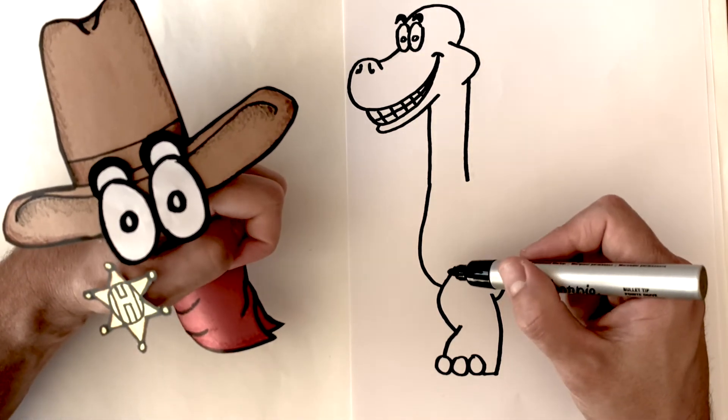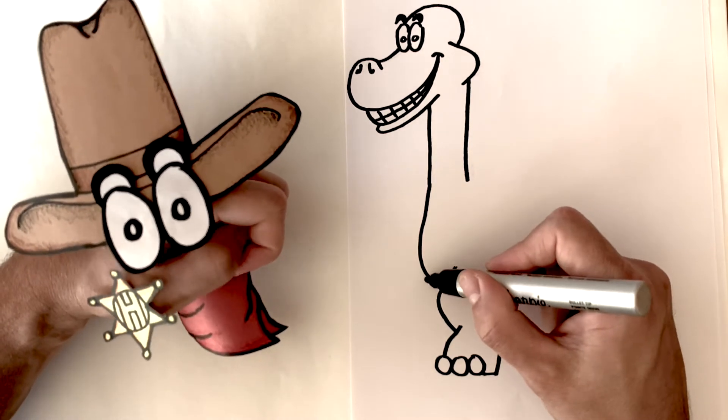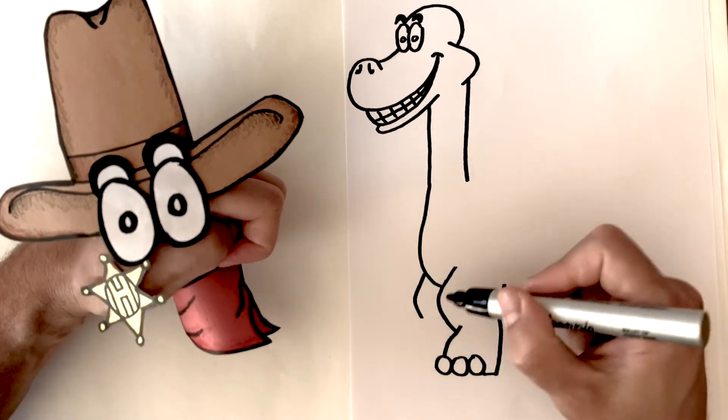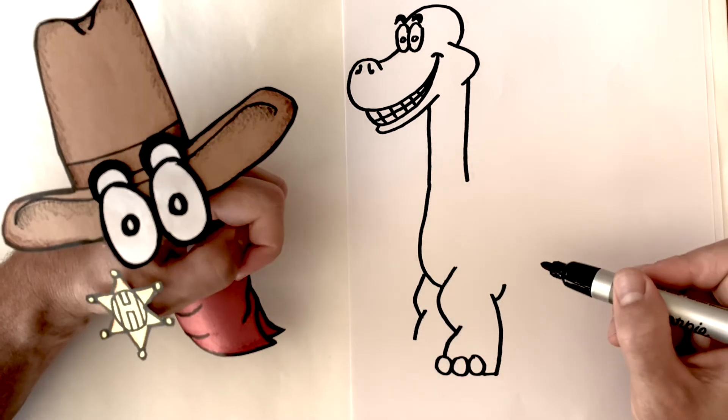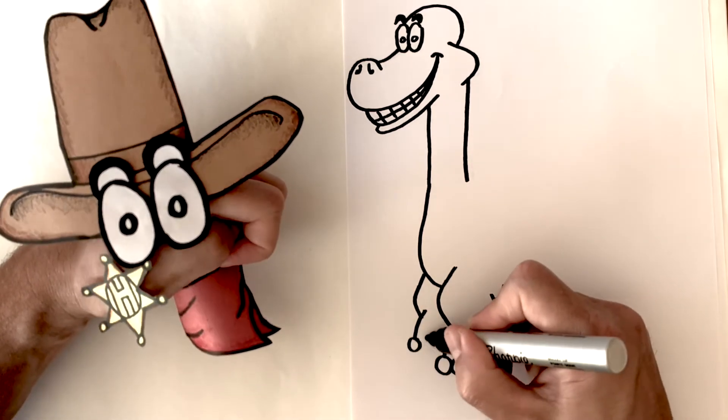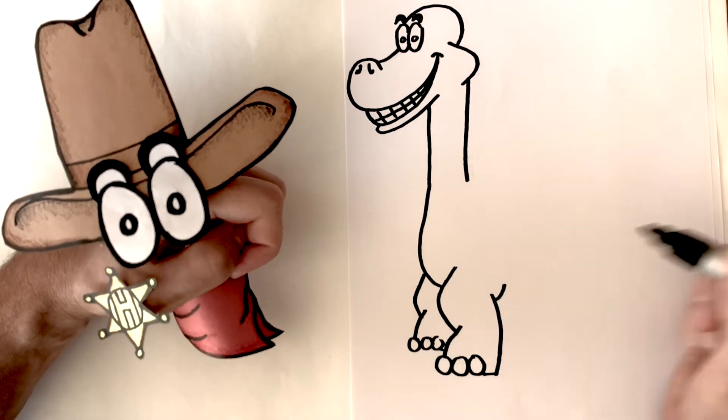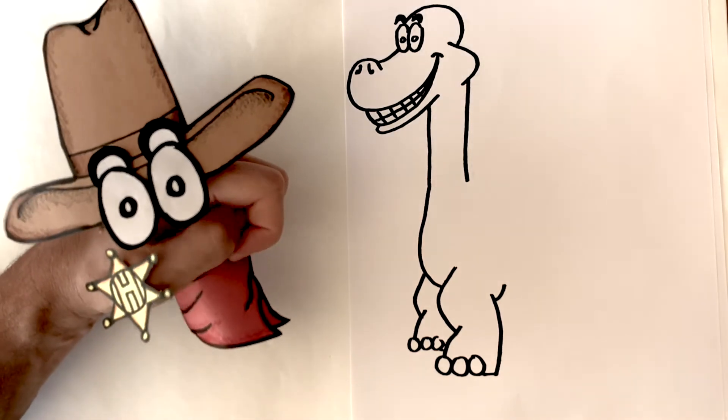Do the same thing back here so we can draw that back leg sticking out. And there you go! Now you can see both legs.